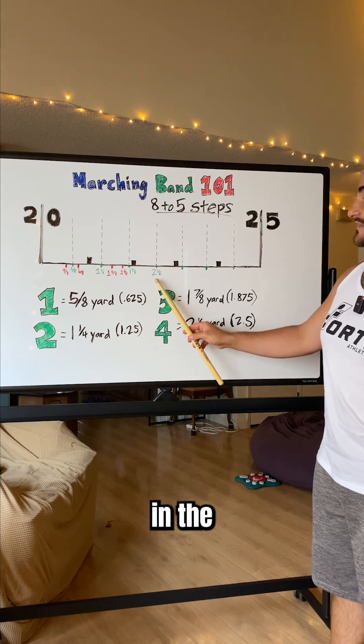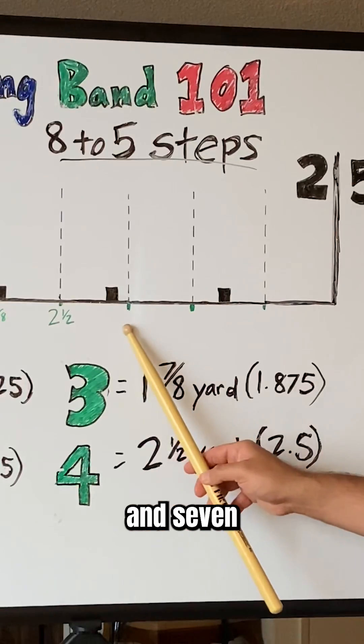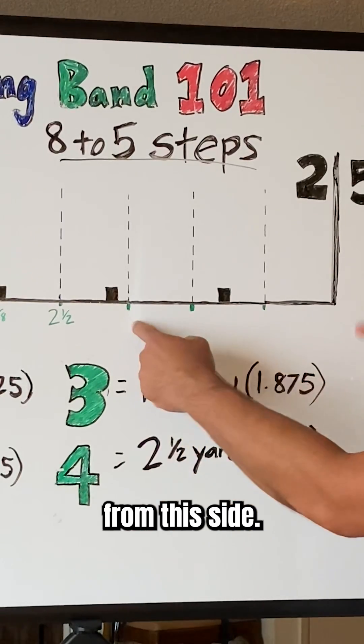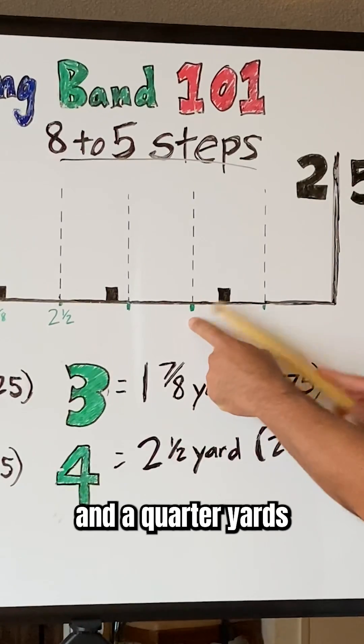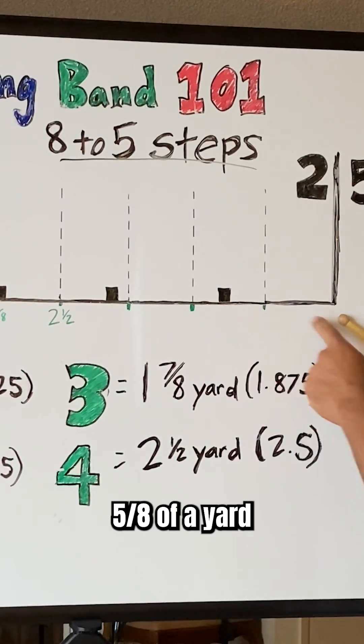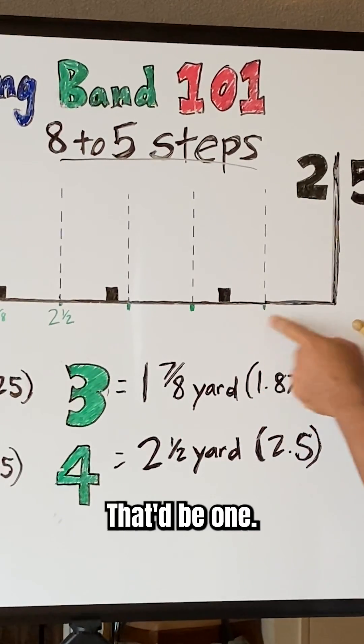And if you repeat these in the opposite order, it'll take you back to the yard line. You've got 1 and 7/8 yards from this side. That would be 3. You've got 1 and a quarter yards from this side. That'd be 2. And you have 5/8 of a yard from here. That'd be 1.